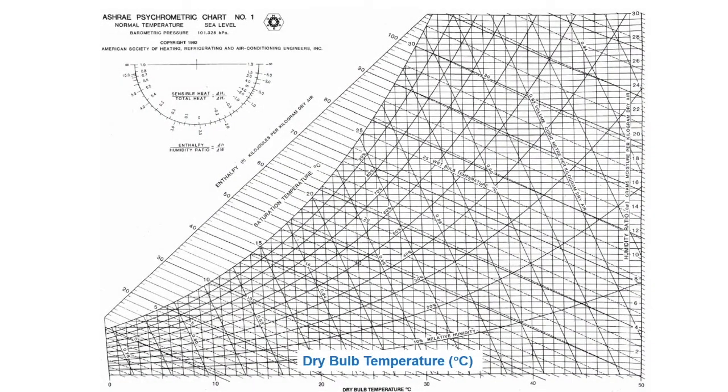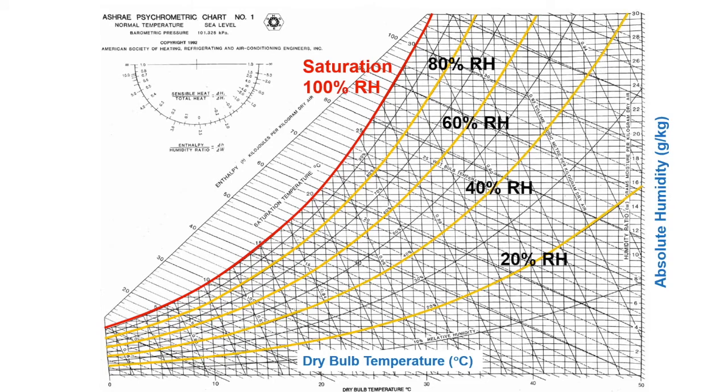So, if we take the air temperature as the x-axis, and the absolute humidity as the y-axis, and plot the saturation line and relative humidity lines versus temperature, we form the main part of the psychrometric chart.